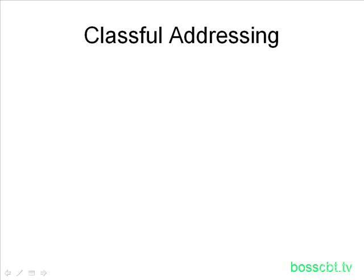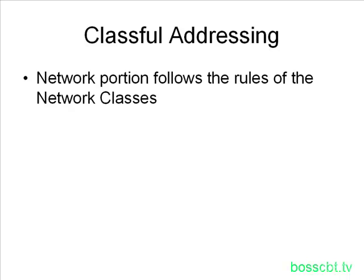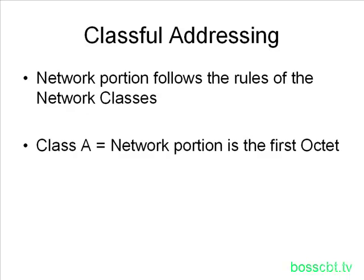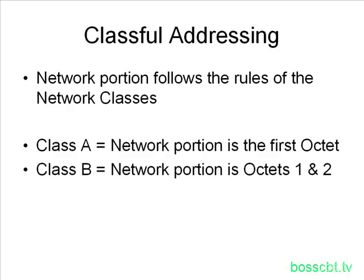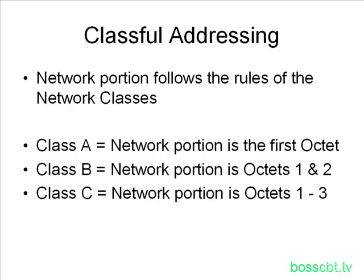Do you remember when we talked about the different classes of networks — A, B, and C? That relates to classful addressing. When we think of an IP address as classful, the network portion of the IP address is always going to follow the rules of the network classes. Class A networks always have the first octet as the network portion. Class B networks always have the first and second octets. Class C networks always have octets 1, 2, and 3. Classful addressing means the network portion always abides by these definitions.